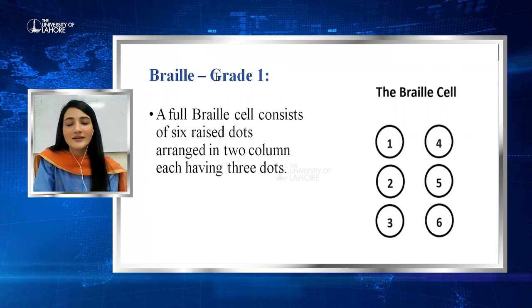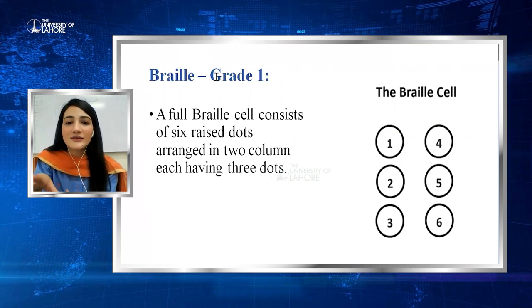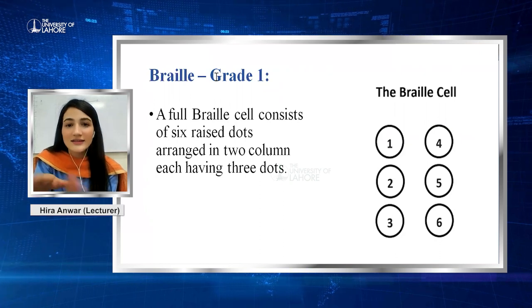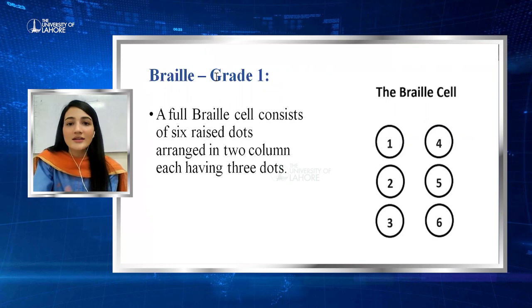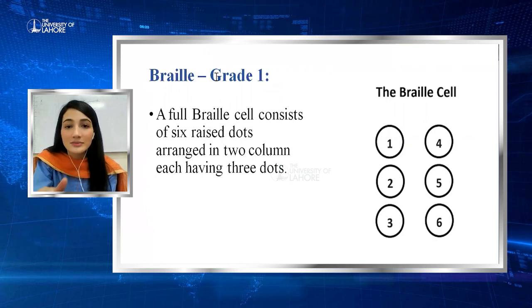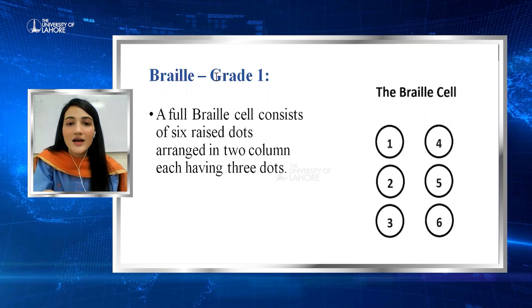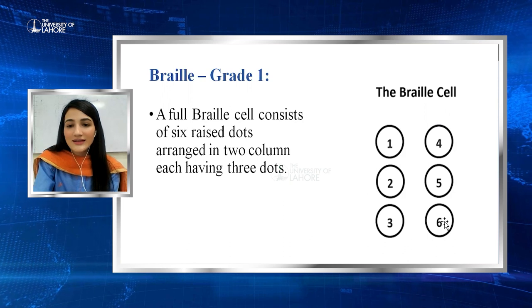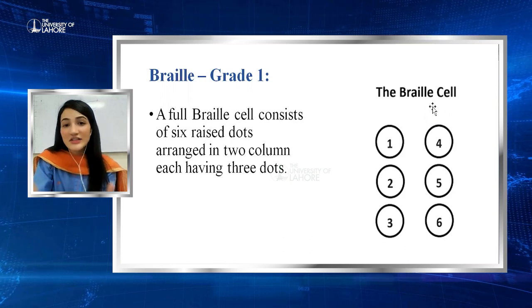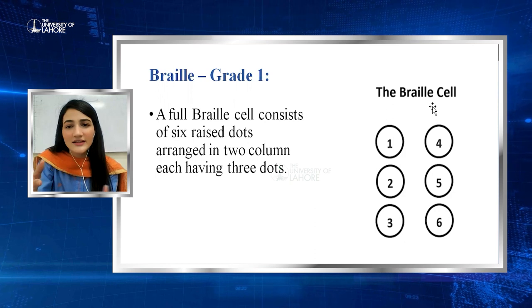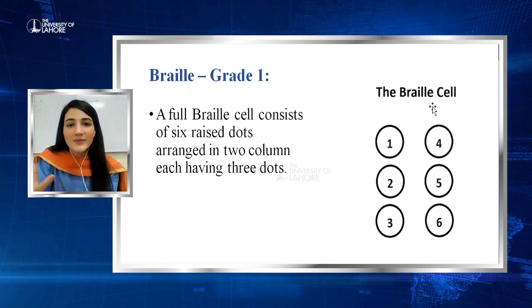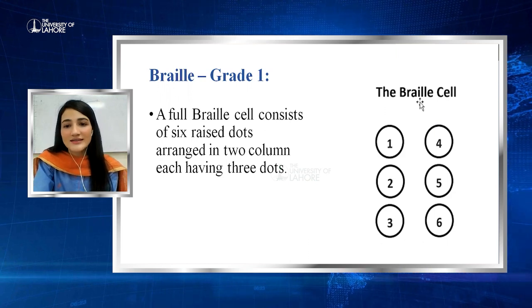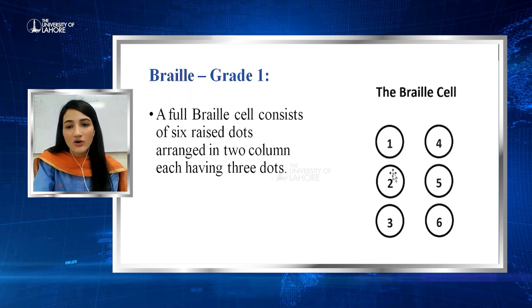Braille grade one is where everything is spelled out as letters and there is nothing contracted or shortened. Braille grade one also consists of numbers and different punctuations as well. Each letter — A, B, C, D — is formed by specific patterns known as a Braille cell. This Braille cell consists of six dots.